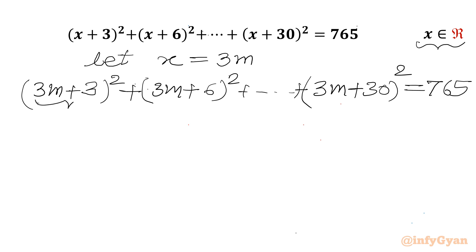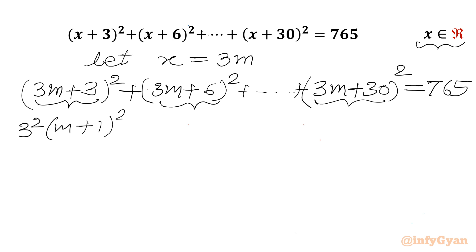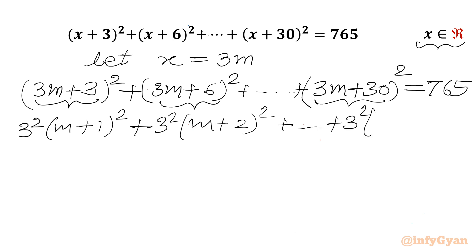Now 3 is looking common from each bracket, so it will come out as 3². So I will write 3² times (m + 1)² plus 3² times (m + 2)² and the last term will be 3² times (m + 10)² equal to 765.